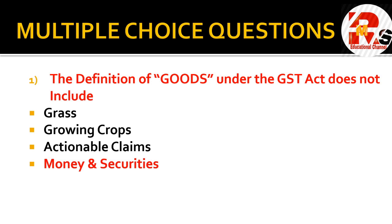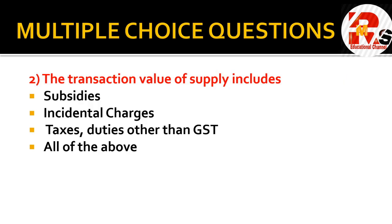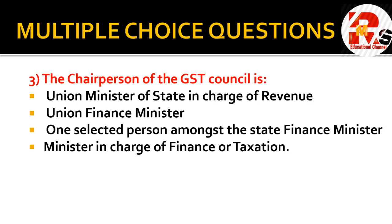The second question: the transaction value of supply includes — subsidies, incidental charges, taxes and duties other than GST. Taxes and duties other than GST are included in the transaction value. So you need to remember that the right answer is all of the above.